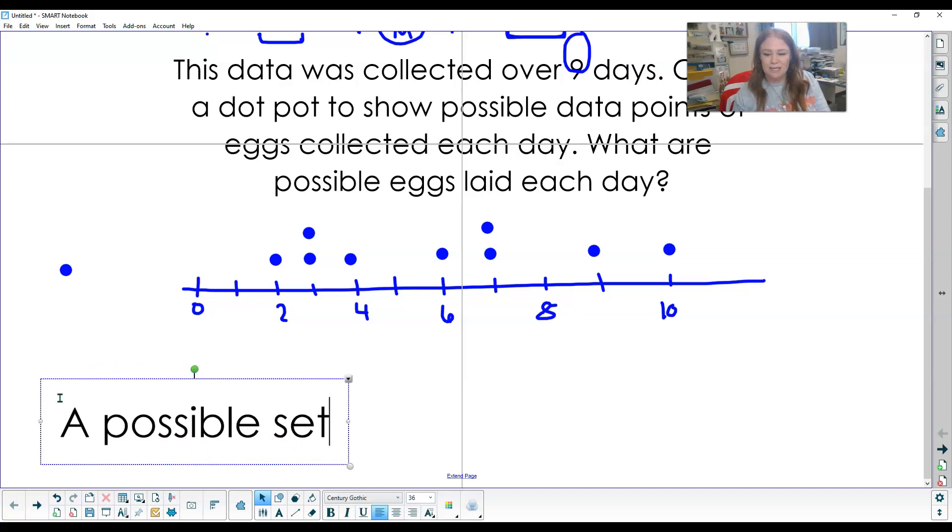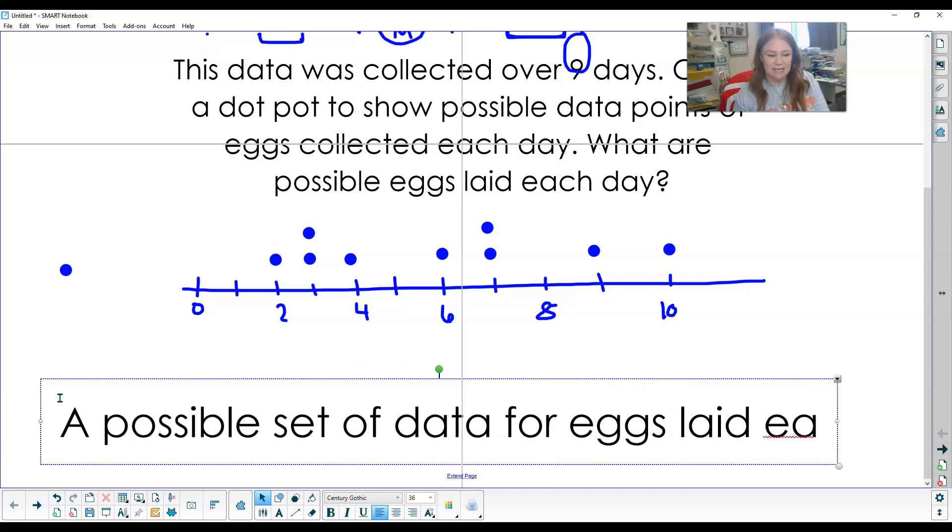A possible set of data for eggs laid each day could be two, three, three, four, six, seven, seven, nine, and ten. So there's my R - I restated the question - and here's my answer.